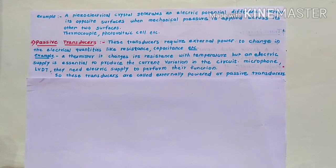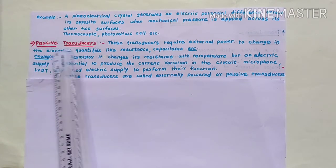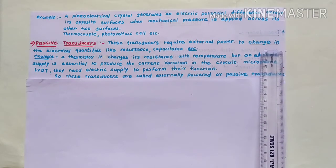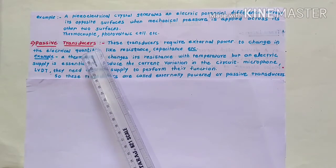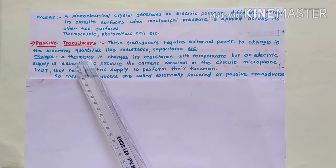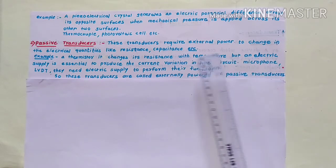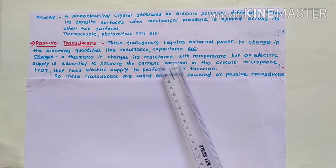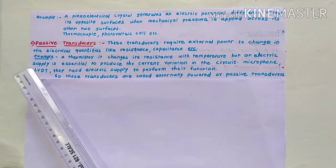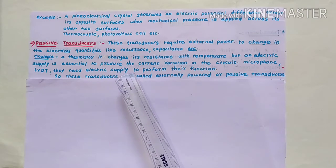The second type is passive transducers. These transducers require external power to change electrical quantities like resistance and capacitance. For example, a thermistor changes its resistance with temperature, but an electric supply is essential to produce current variation in the circuit. Similarly, a capacitive microphone and LVDT (linear variable differential transducer) need an electric supply to perform their function.